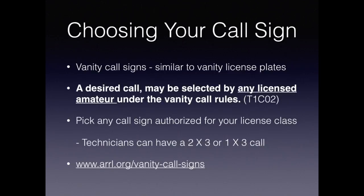In amateur radio, you are allowed to choose your own call sign once you have the original call sign — the first one must be issued by the FCC. But similar to vanity license plates, you can get a vanity call sign. KE2GS is a vanity call sign; my original one was KD5SFQ. You can pick any desired call sign that's available under certain vanity rules — you're allowed to pick any call sign authorized for your class. For example, technicians can have a 2x3 or a 1x3 call sign. Rules and regulations for vanity call signs can be found at www.arrl.org/vanity-call-signs.